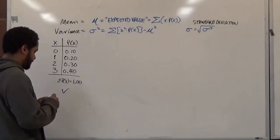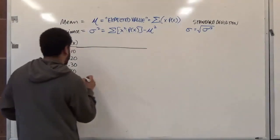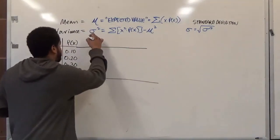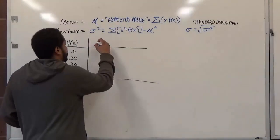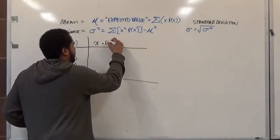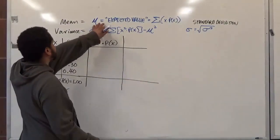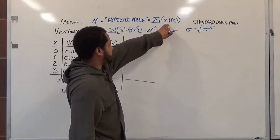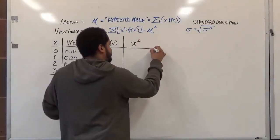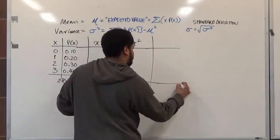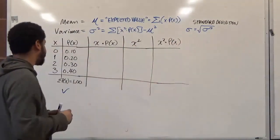Now let's complete the table so we can get to these values. We already have our P(x) column. We'll add a column for x times P(x) — used to compute the mean — then a column for x², and finally a column for x² times P(x), which will be used to compute both the variance and standard deviation.